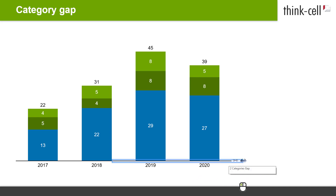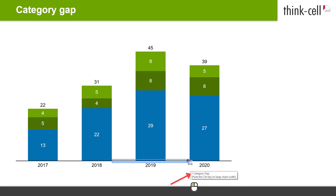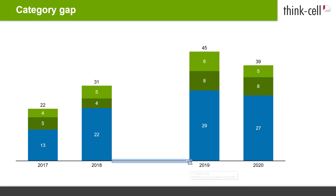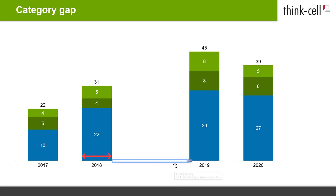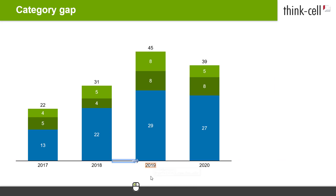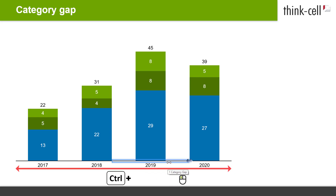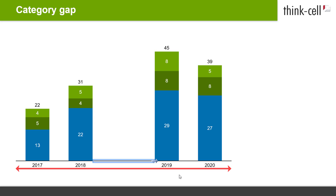While you drag, the handle snaps to every full category gap and a tooltip shows how many gaps you will insert. A category gap is as wide as one column width plus one gap width. When you insert a category gap, the width of the column is preserved while the overall chart width changes. If you would like to keep the overall chart width, hold down CTRL while dragging. The column widths will be increased or decreased to make up for the category gap.